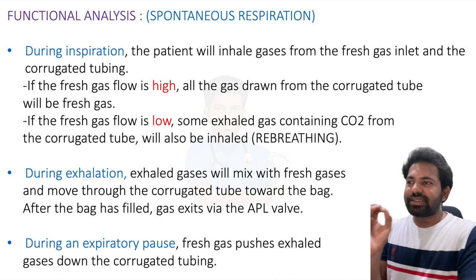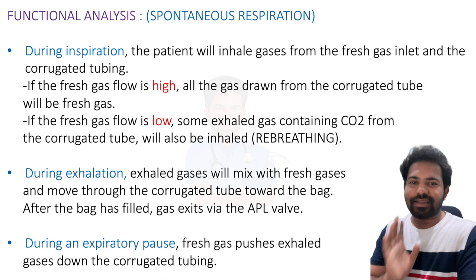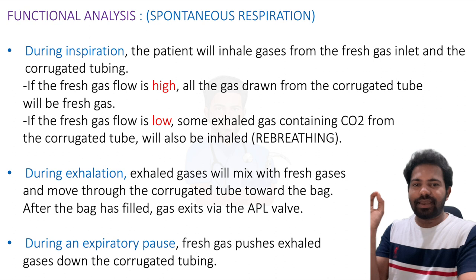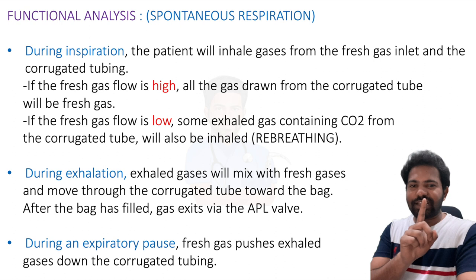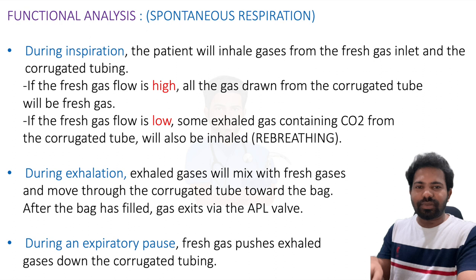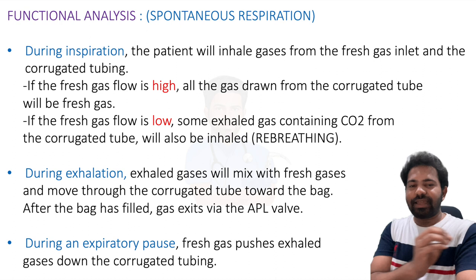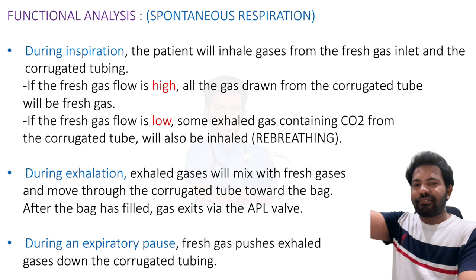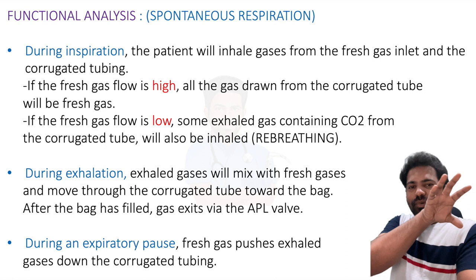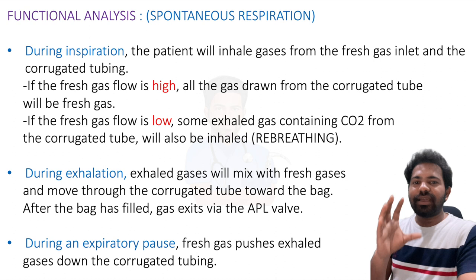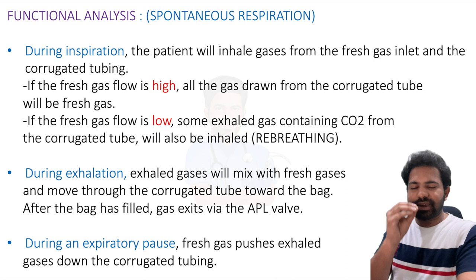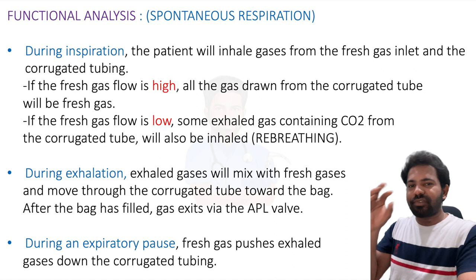If the fresh gas flow is high, all gases drawn from the corrugated tube will be fresh gas. When the patient expires, expired gases travel through the corrugated tube — some go into the reservoir bag and most are expelled through the APL valve. When fresh gas flow is very high it pushes all expired gases through the APL valve to the atmosphere. But if fresh gas flow is low, fewer expired gases are expelled and some remain in the corrugated tube, leading to re-breathing.